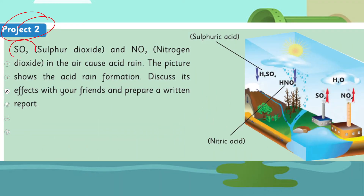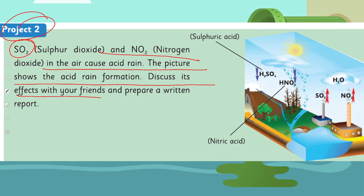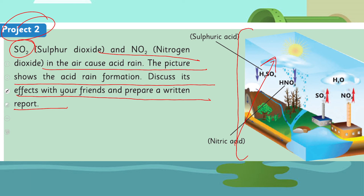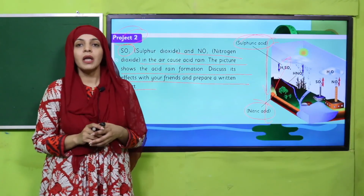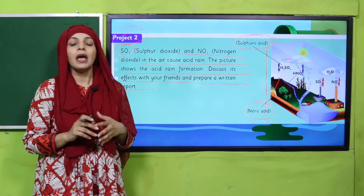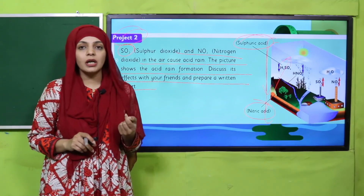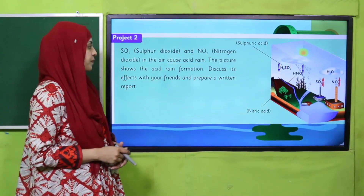For Project Number 2: sulfur dioxide and nitrogen dioxide in the air cause acid rain. The picture shows acid rain formation. When fossil fuels are burned, sulfur dioxide and nitrogen dioxide are released into the air. When these gases combine with water vapor, they form sulfuric acid and nitric acid — which are very strong acids, harmful to health. When rain falls, these acids come down, causing adverse effects on our property, on humans, and on health. Discuss the effects with your friends and class fellows and prepare a written report.